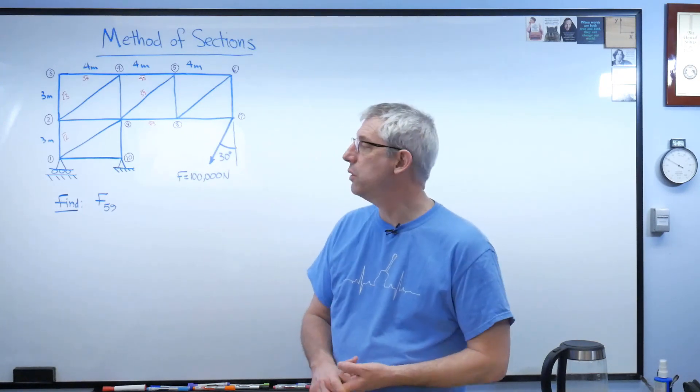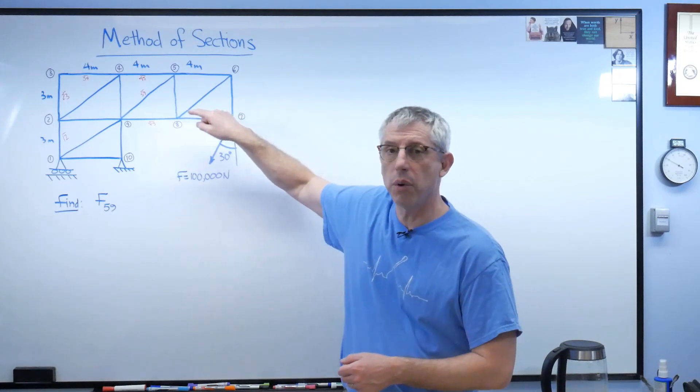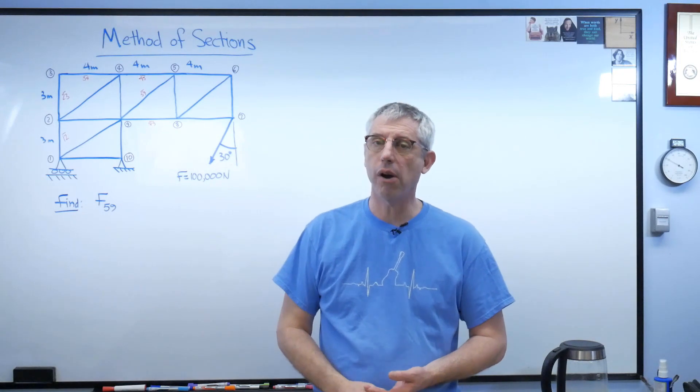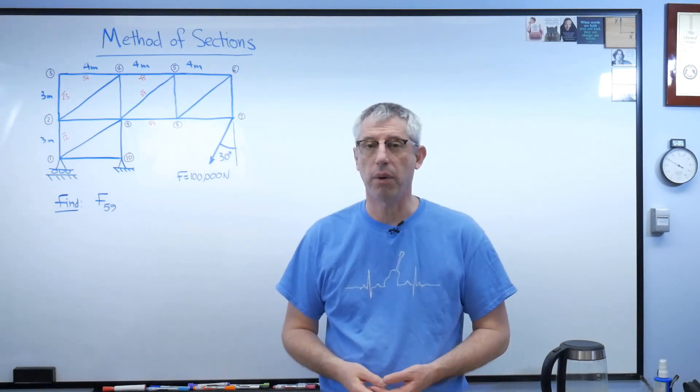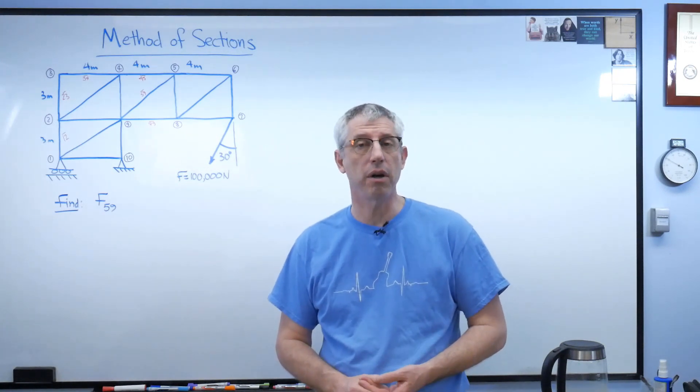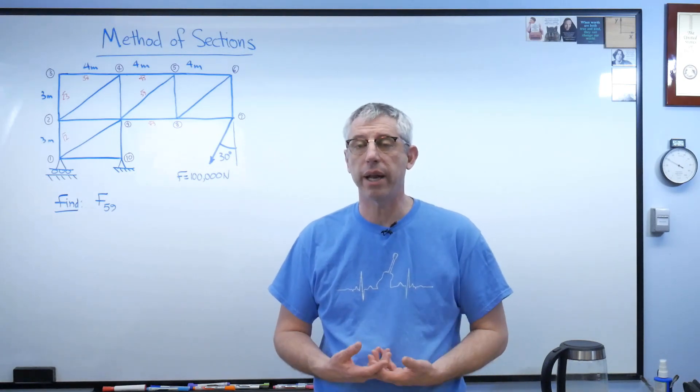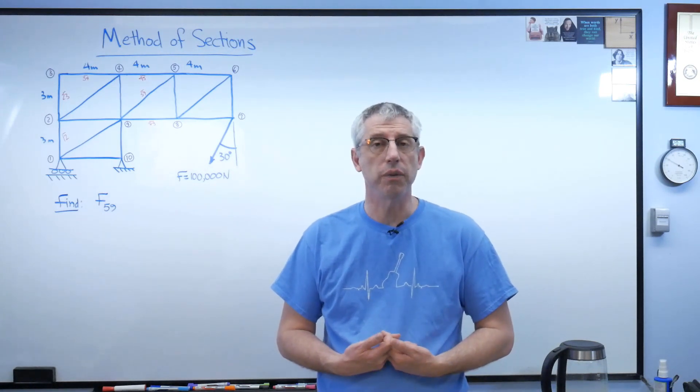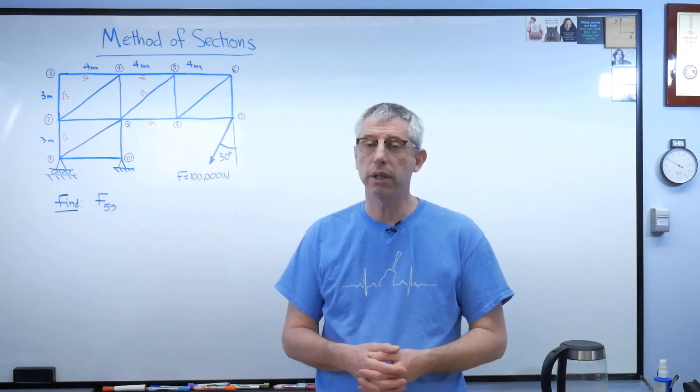With the method of joints, you solve for the reaction forces and then start moving point by point across the structure to get to the element you want. It's not very hard, but it can be a little tedious. The method of sections fixes that problem. It lets you go directly to the elements you're interested in and solve only for those, using the same kind of statics principles but giving you the ability to analyze parts of a complex structure pretty easily.